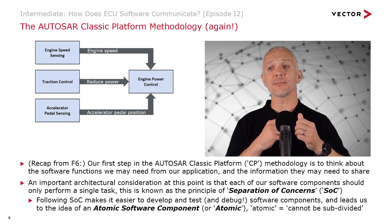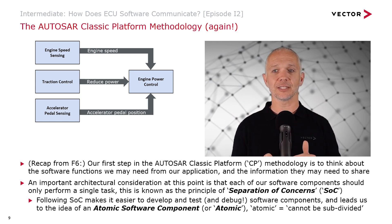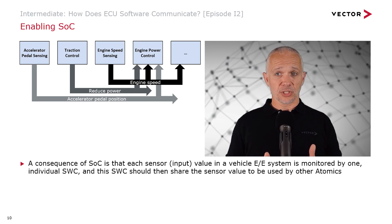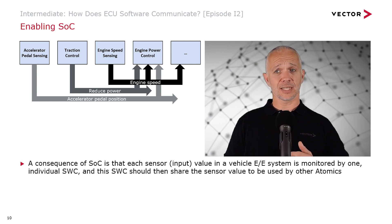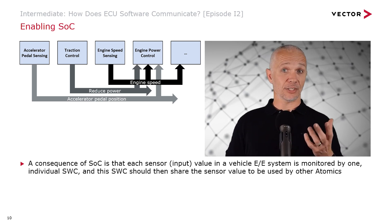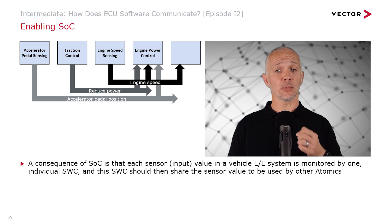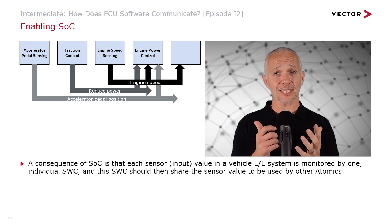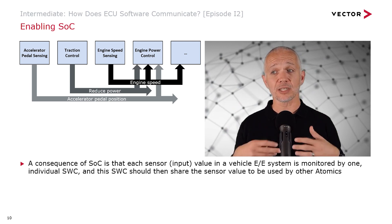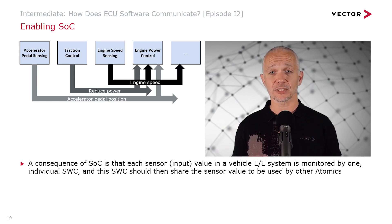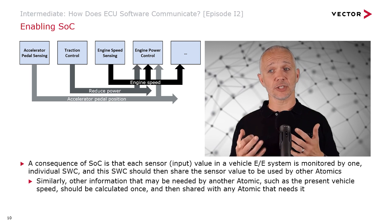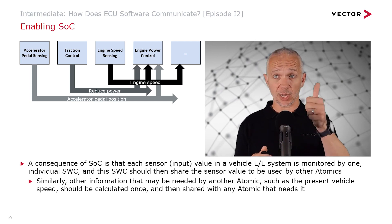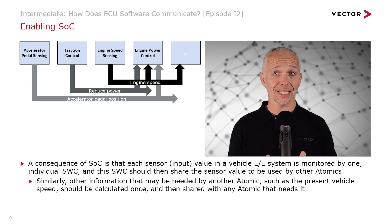Atomic, in this sense, is something that cannot be usefully subdivided - we're not trying to split the atom when we're making software. To enable separation of concerns, each sensor value that we may need to make use of in a vehicle EE system is monitored by one individual software component. That software component should then share the sensor value to be used by other atomics that need that information. Similarly, any other information needed by a number of atomics, such as the present vehicle speed, should be calculated one time and then shared with any atomic that needs it.